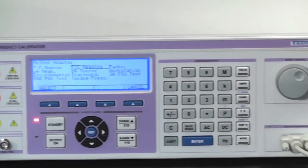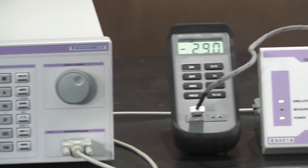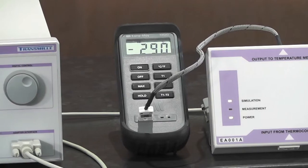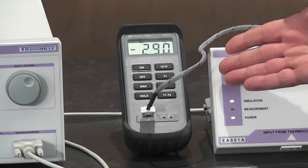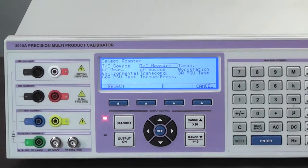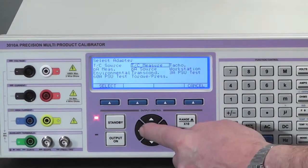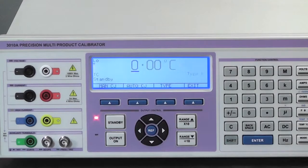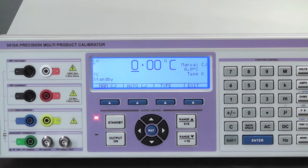To simulate temperature begin by connecting the unit under test to the thermocouple adapter. Then proceed to select TC source. Using the soft key select auto CJC.